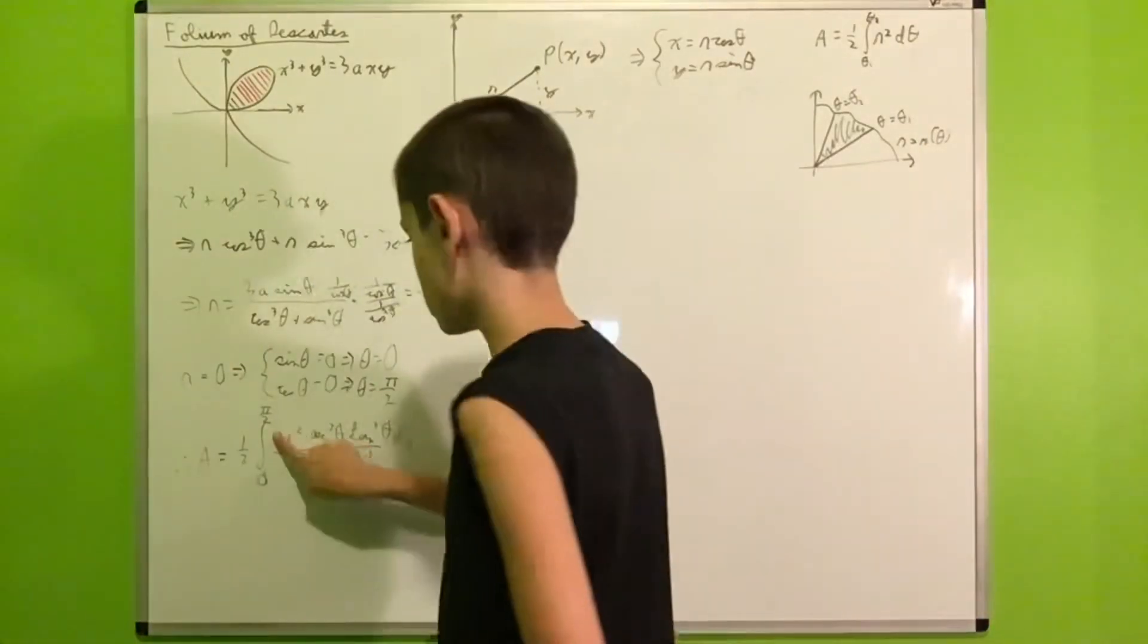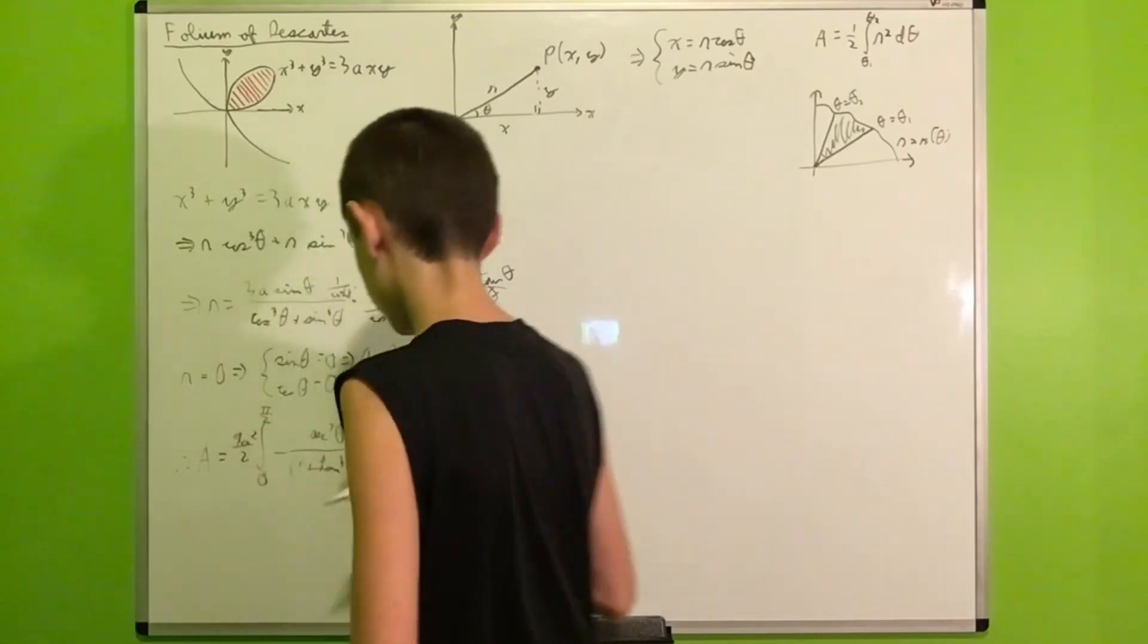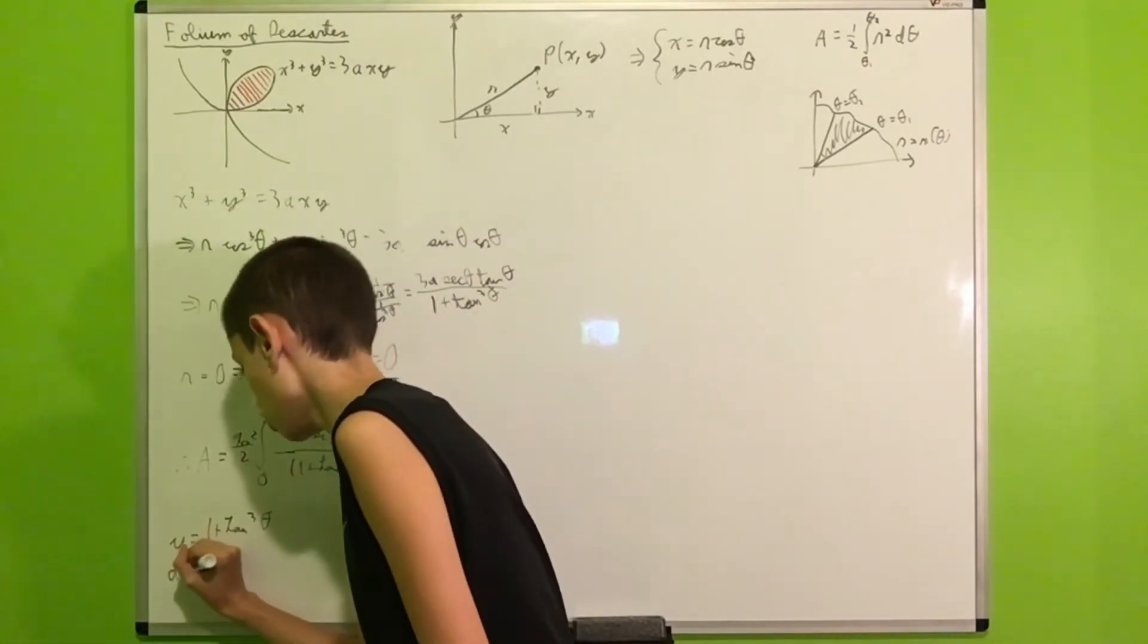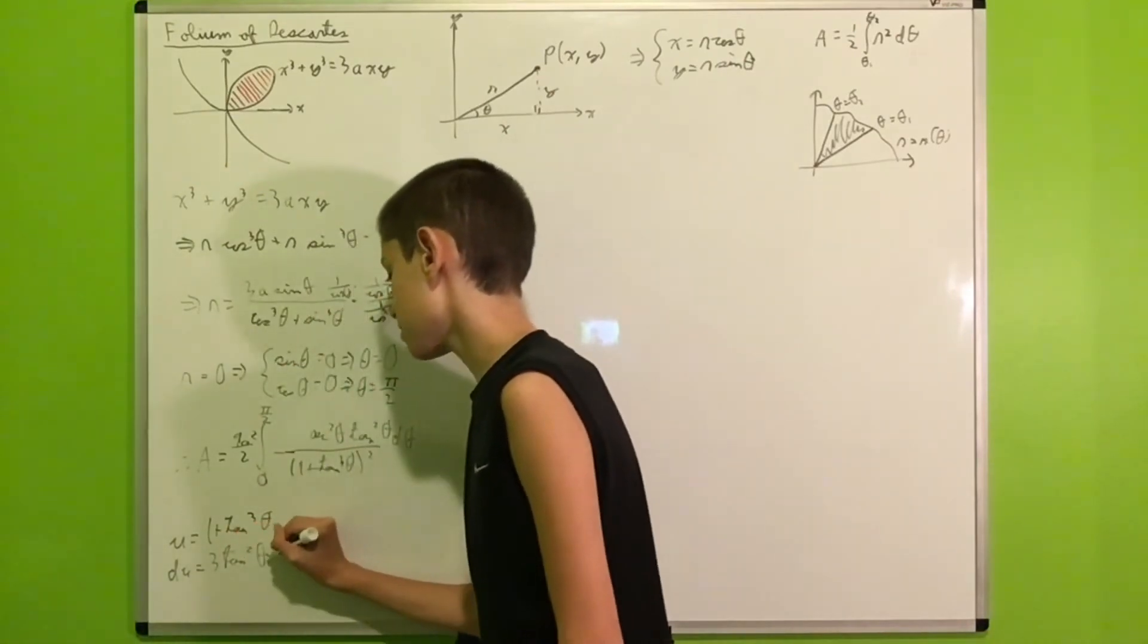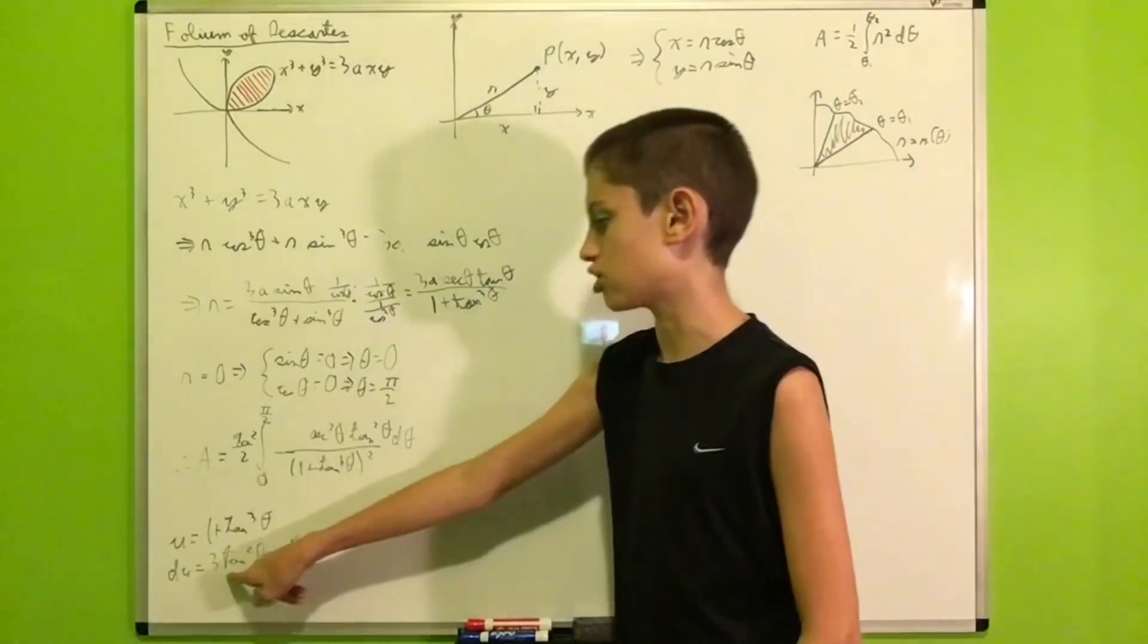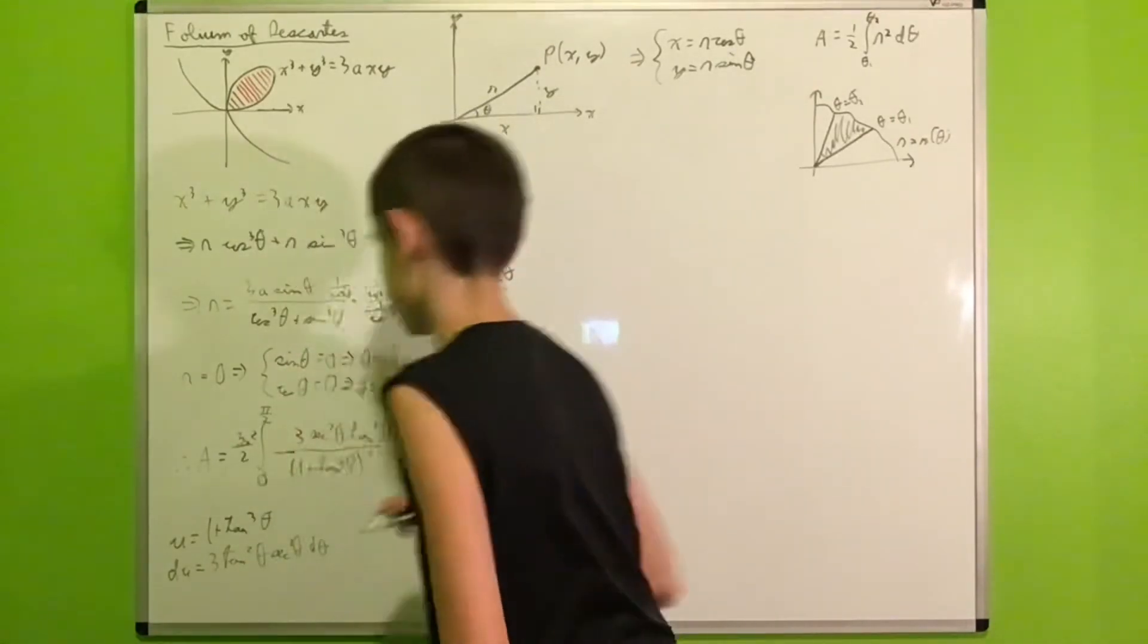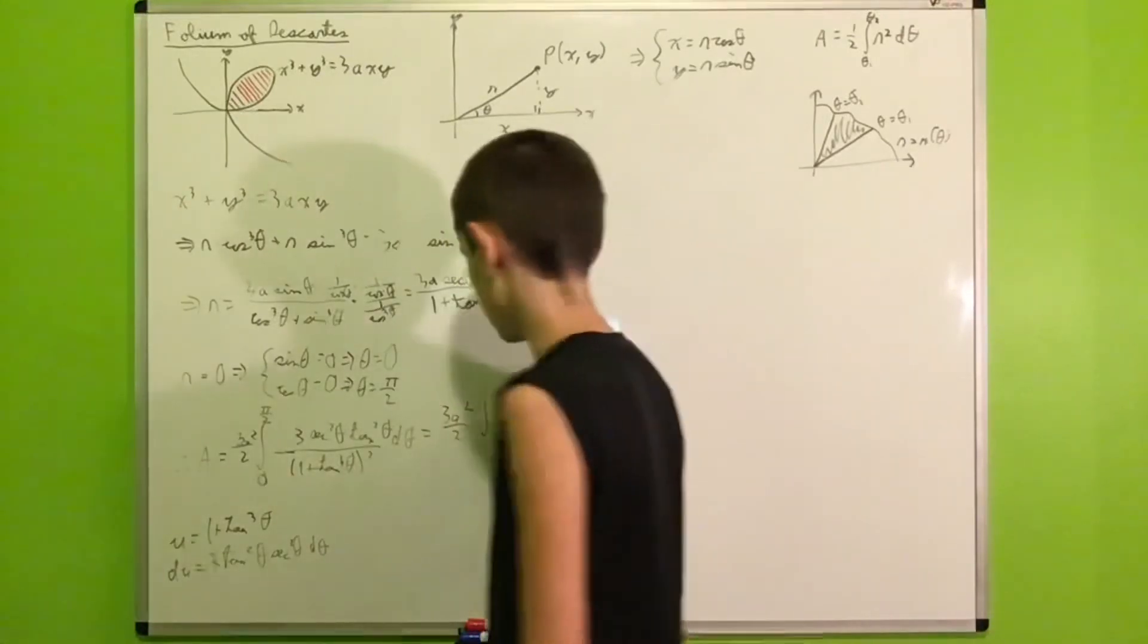And now, we can just take the 9a squared term out. So, we'll get 9a squared over 2 in the front. And now, for this integral, I would like to introduce a substitution. Namely, we will let some u be equal to 1 plus the tangent cubed of theta, which means du will be 3 tangent squared theta times secant squared theta d theta. Don't forget to use the chain rule. So, we have a secant squared theta tangent squared theta in the numerator, just like our du. But what we need is a 3. And we know that 9 is nothing but 3 times 3. So, we can split that 9 into 3 times 3, and bring one of those 3s inside the integral, and we're ready to apply our substitution.